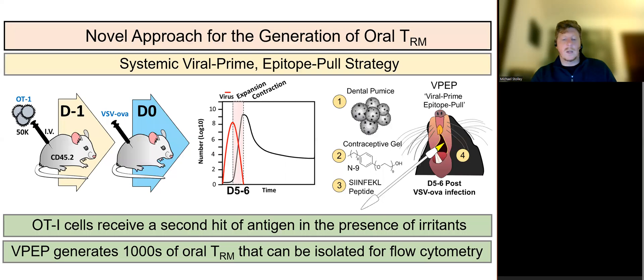We developed a systemic viral prime epitope pull, or VPEP, approach for generating preternaturally abundant and tractable CD8 TRM in the oral mucosa of mice.